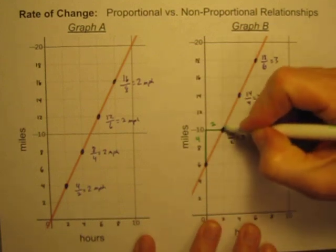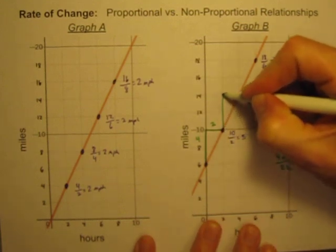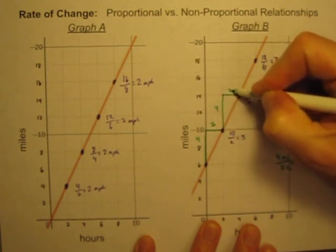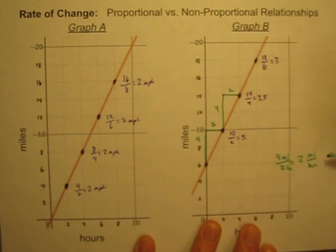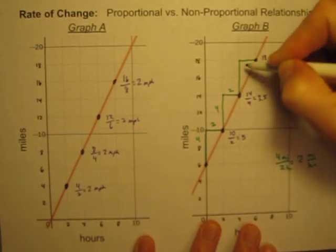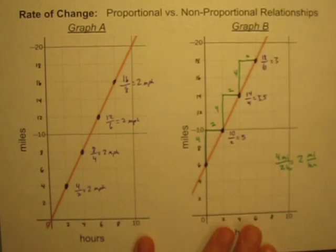I can do it again. I can see that from this point to this point, I increased by four miles from ten to fourteen. So that's four miles in two hours. Four divided by two is two. Another four miles in another two hours. Four divided by two is still two.